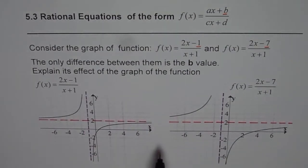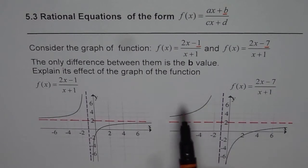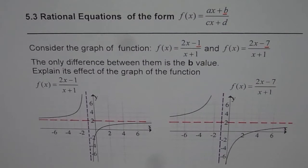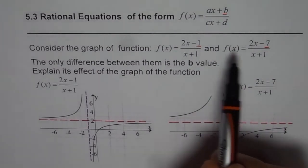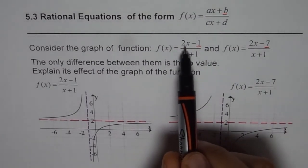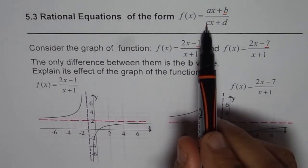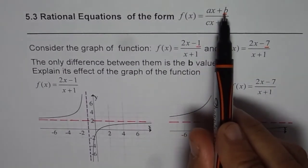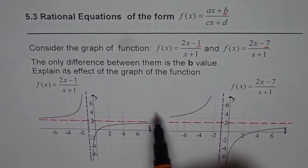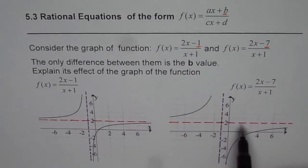What we have done here is also given you the graph of the function, so you can actually graph yourself from the equation and then answer the question. But let's discuss what difference this value makes. We have exactly the same values for a, c, and d — these parameters are the same. One parameter is different. So let us see how it affects the graph of a rational function.